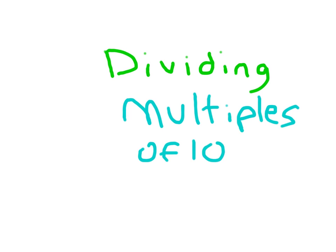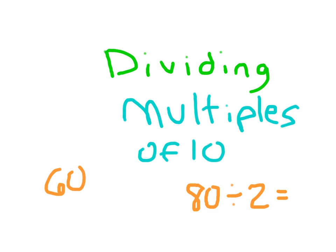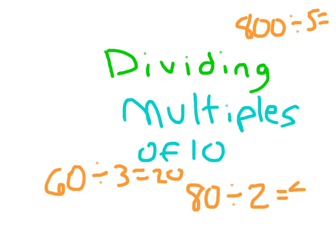Let's look at dividing multiples of 10. This is the type of problem that we'll face: 80 divided by 2, where our dividend is what we're dividing and our divisor is going to be a single-digit divisor. So even 800 divided by 5 is another type of problem we'd be facing. I'm going to show you how you can go about solving them.